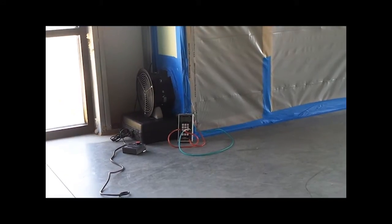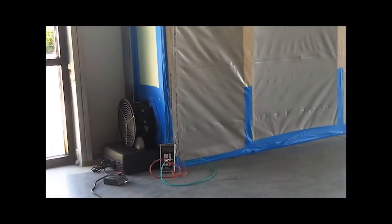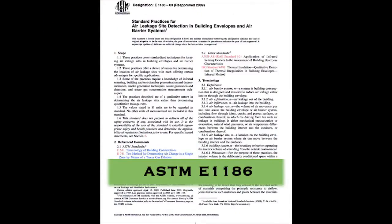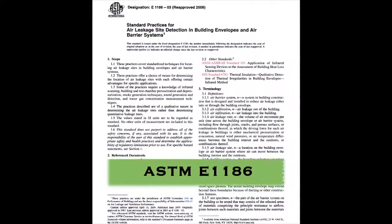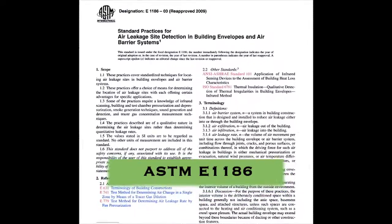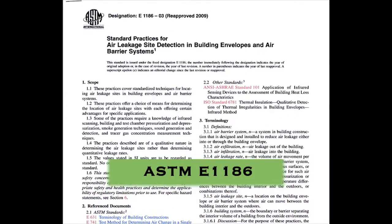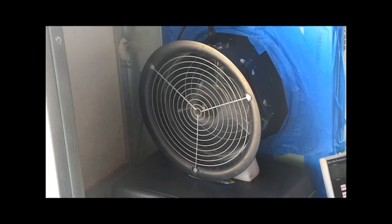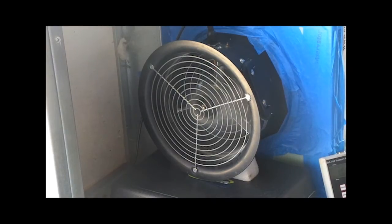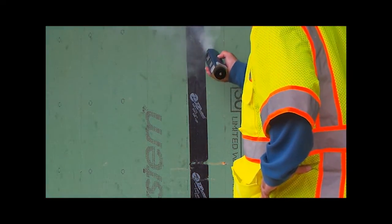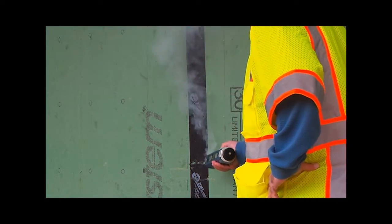One of the qualitative tests that can be performed with this approach is checking for conformance to the ASTM standard E-1186, which is titled Standard Practices for Air Leakage Site Detection in Building Envelopes and Air Barrier Systems. In this test, a pressure is created in the chamber and then a smoke tracer or other selected method is used to visually inspect for air leaks in the wall assembly.